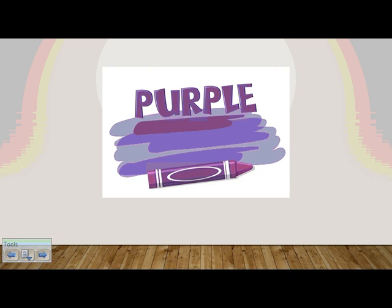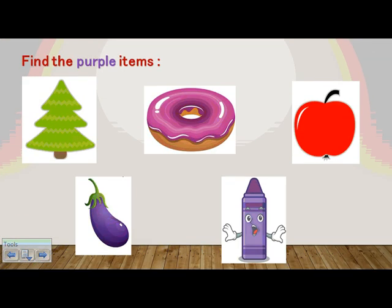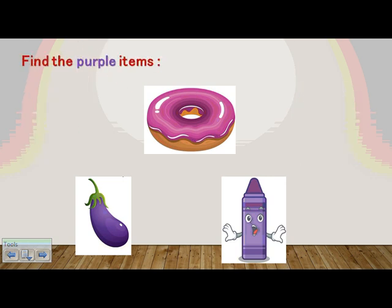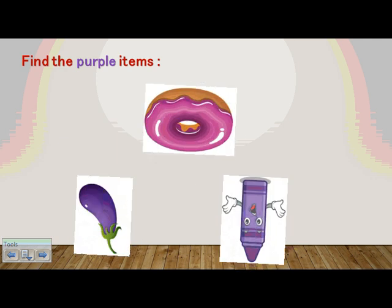This is color purple. Now on this page you are going to find the purple items. We have a donut, apple, eggplant, and a crayon — which ones are purple? We have three purple items: the donut is purple, the eggplant is purple, and the crayon is purple!